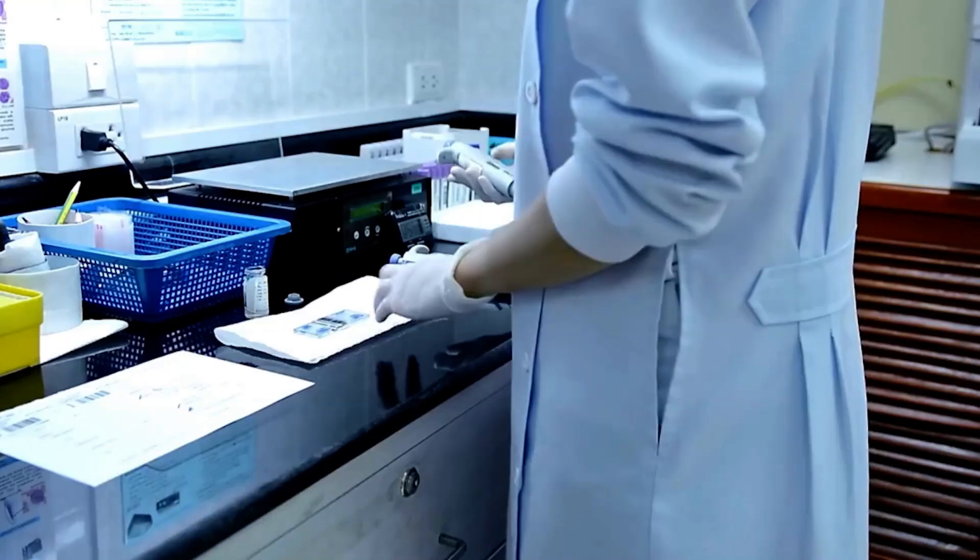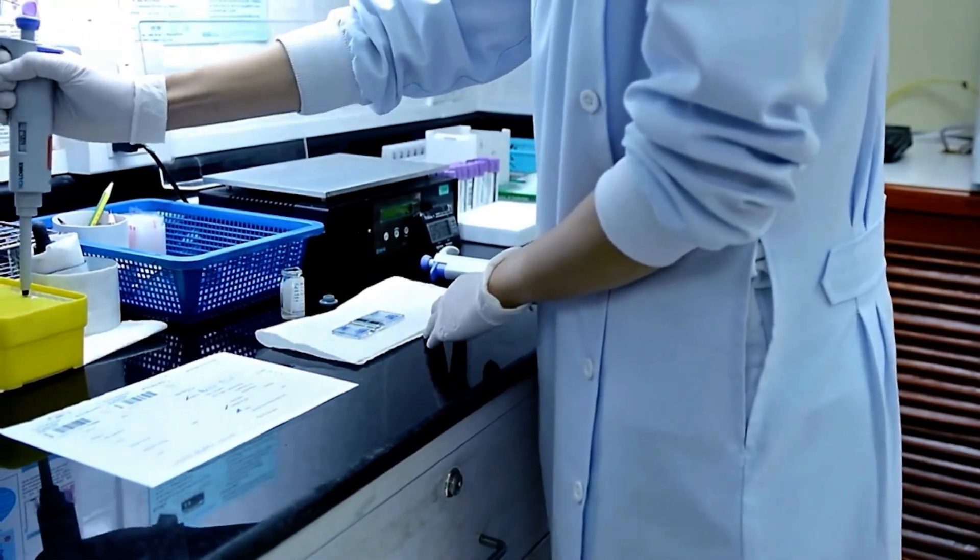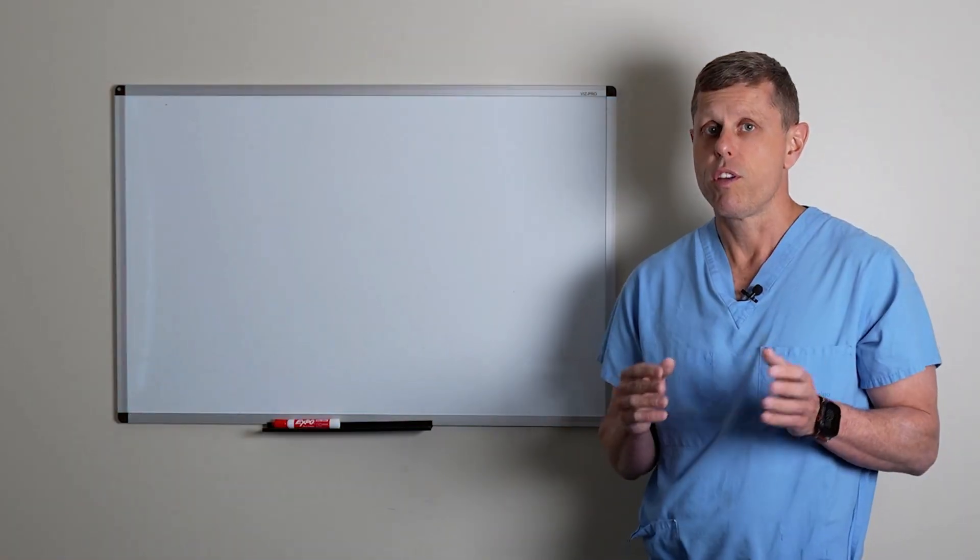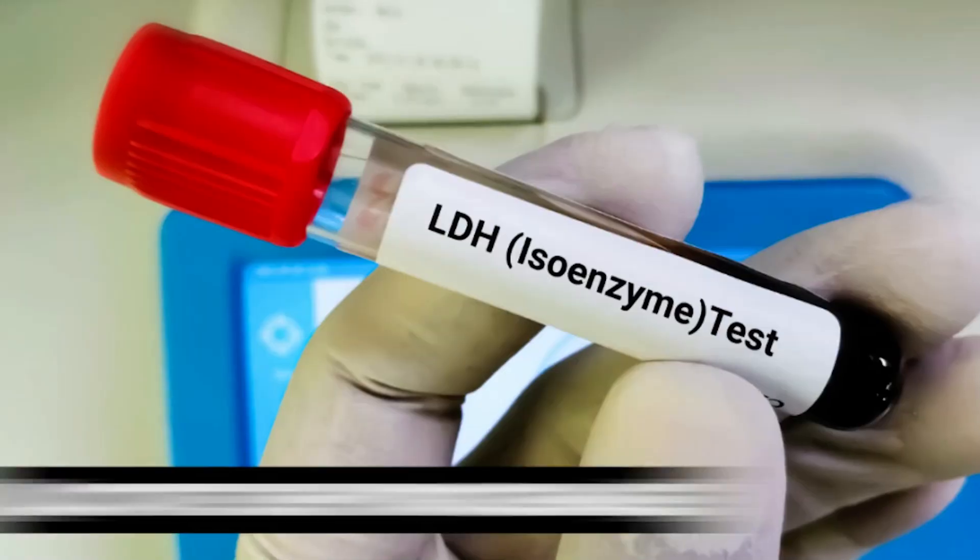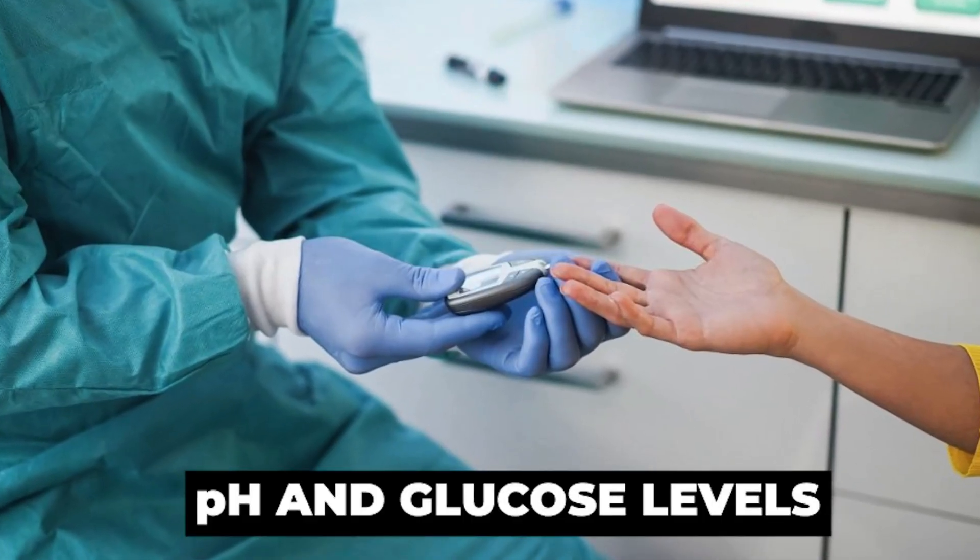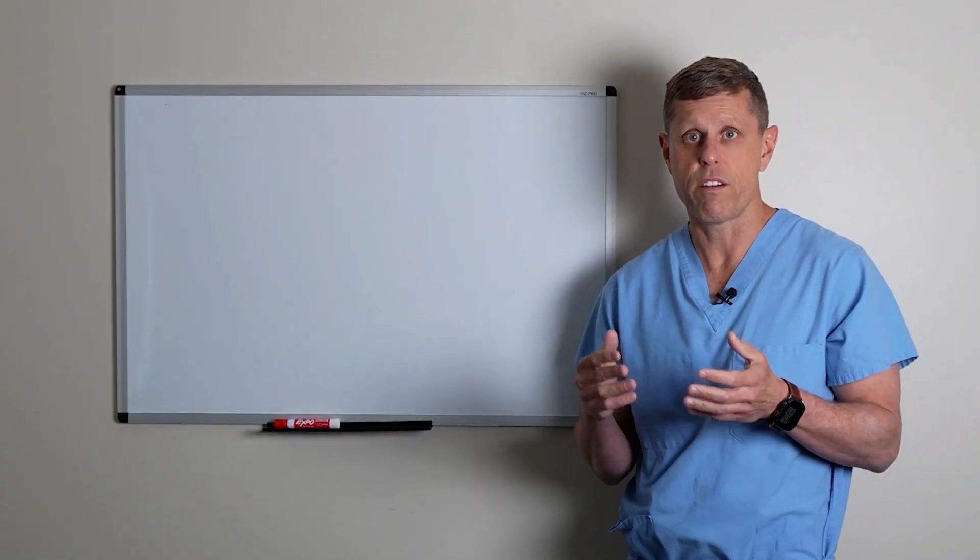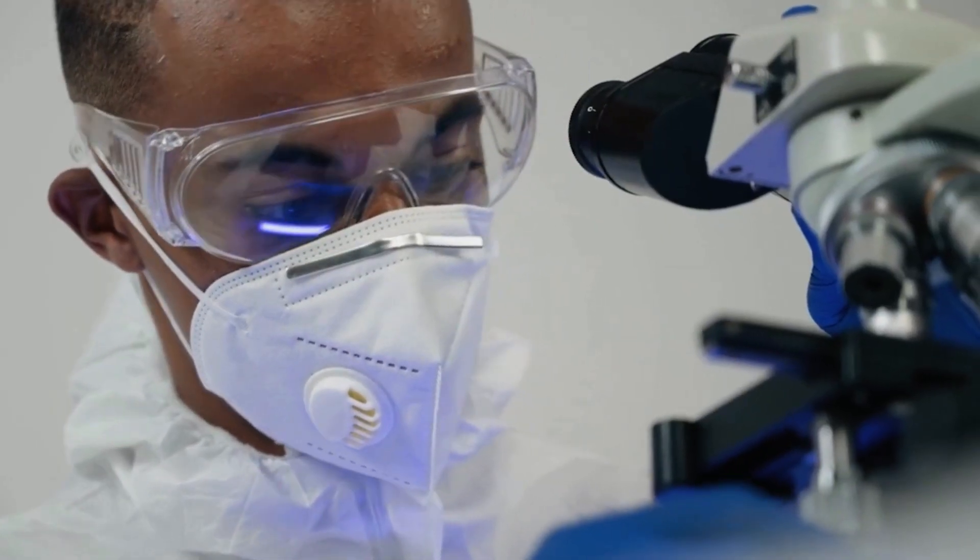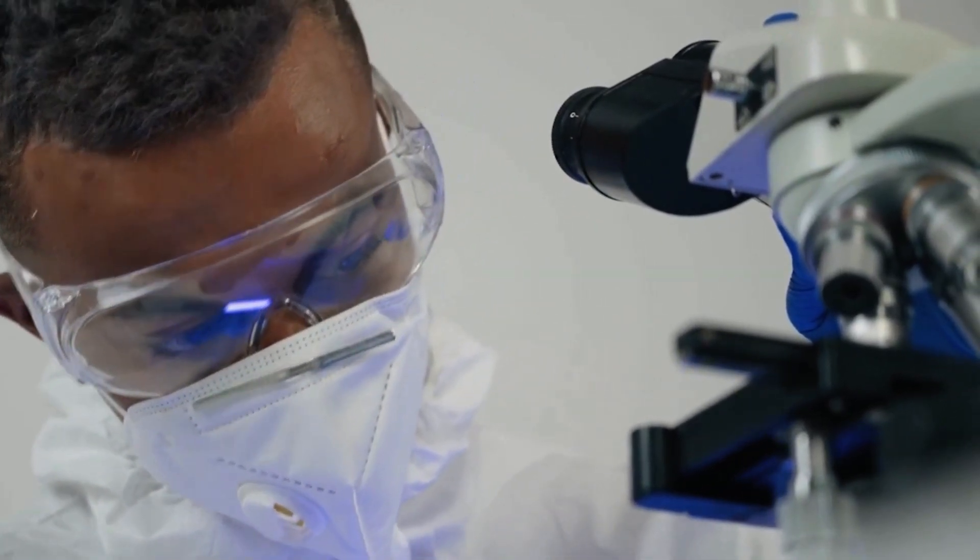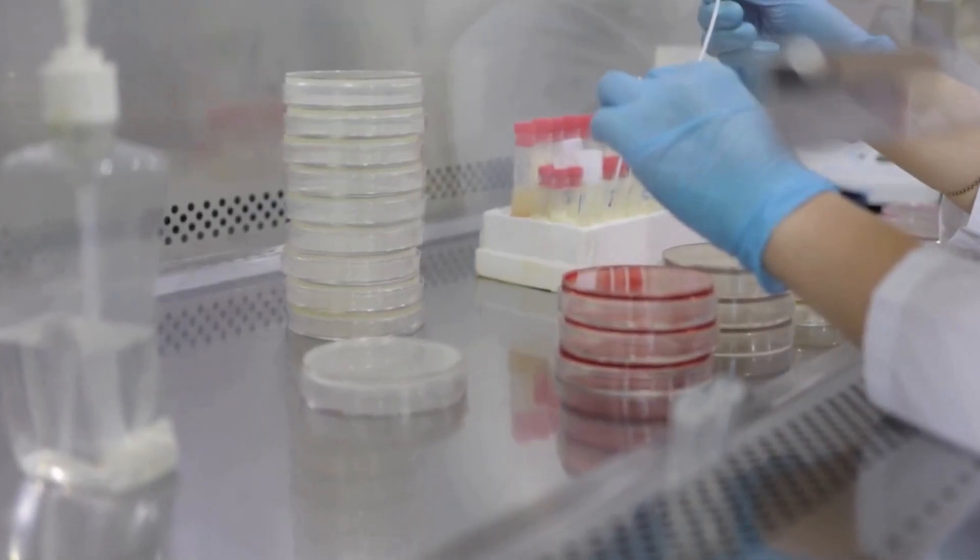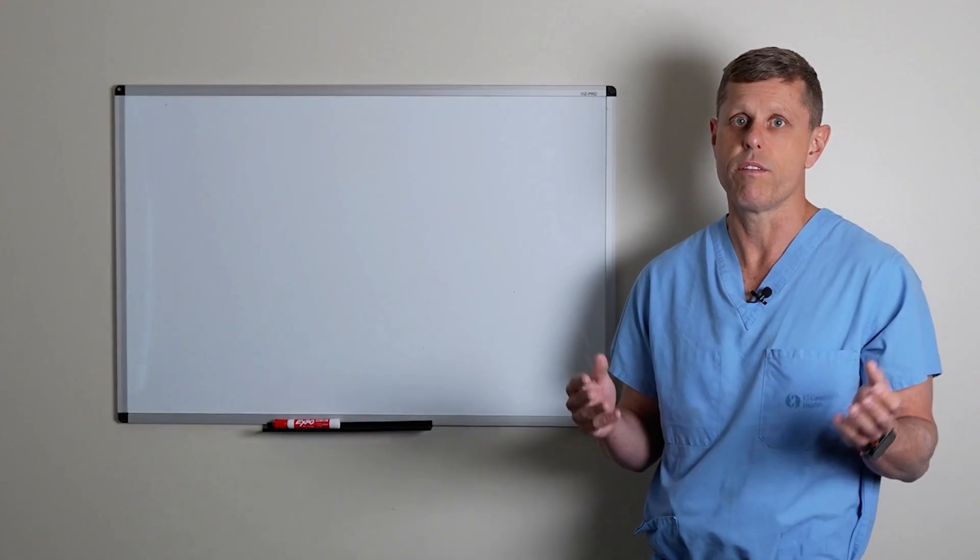We'll send the fluid for cell count and differential to see not only how many cells are there but what are the types of cells. We're also going to send the fluid for a test called protein and another test called LDH, which will help us differentiate the causes of the fluid. We send for pH and glucose levels because if both are very low that indicates an infection. We obviously will send for cytology, which is a test where the pathologist looks under the microscope to see if there are any cancer cells, and we send for microbiology to check not only for bacterial infections but also tuberculosis and fungal infections.